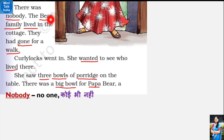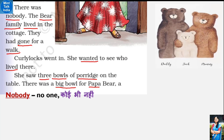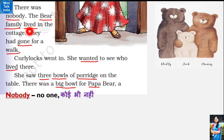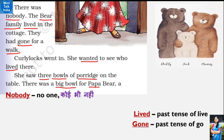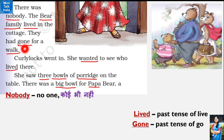The bear family lived in the cottage. Ghar ke andar jaake usne shayad ek parivaar ka photograph dekha hoga, jis mein ek papa bear the, ek mummy bear thi, aur ek baby bear tha. Usi se Curly Locks ko pata chala ki ek bhaalu ka parivaar wahaan pe rehta tha. 'Lived' - 'live' ka past tense hota hai. They had gone for a walk - 'gone', 'go' ka past tense. Woh log thoda walk karne ke liye gaye hue the, isliye toh ghar pe koi nahi tha.